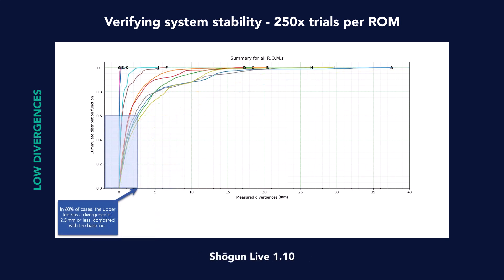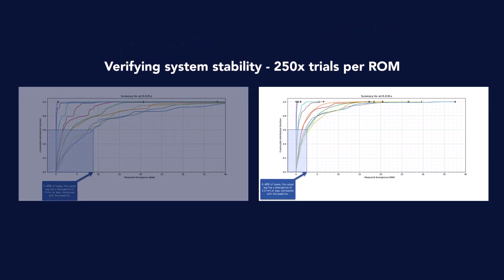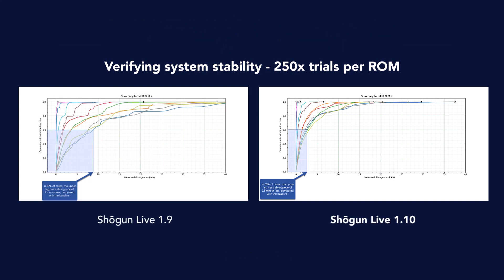In Shogun 1.10, we can see that all bones demonstrate a significantly lower divergence, and are generally far more consistent. The upper leg divergence of 9mm seen in Shogun 1.8 and 1.9 has been reduced to 2.5mm in Shogun 1.10. We built this validation around as broad a variety of ROMs as possible, so that we can have confidence that these changes will benefit the broadest number of users.